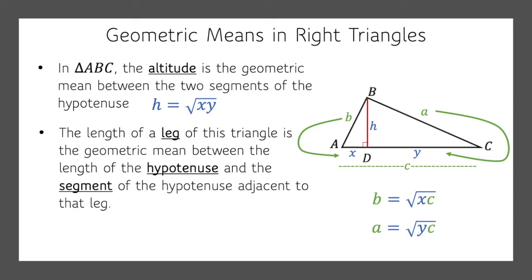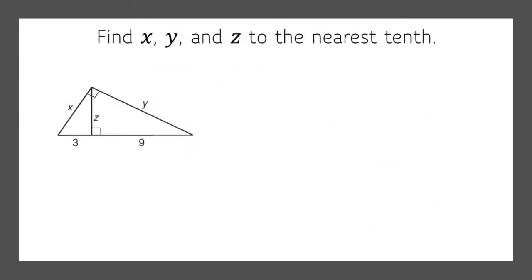So let's take this for a test run. Sometimes it's easier if you just see an example. So we're going to find X, Y, and Z to the nearest tenth. We'll start with X. And first we need to find our hypotenuse. So 3 plus 9, that's 12. And to find X, I'm going to look from X, and I run into 3. So I know that X is the square root of 3 times 12, square root of 36. So X is 6.